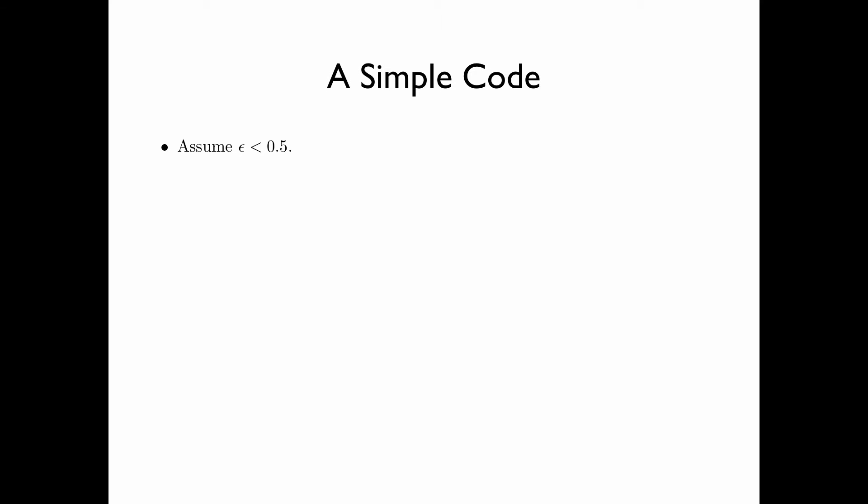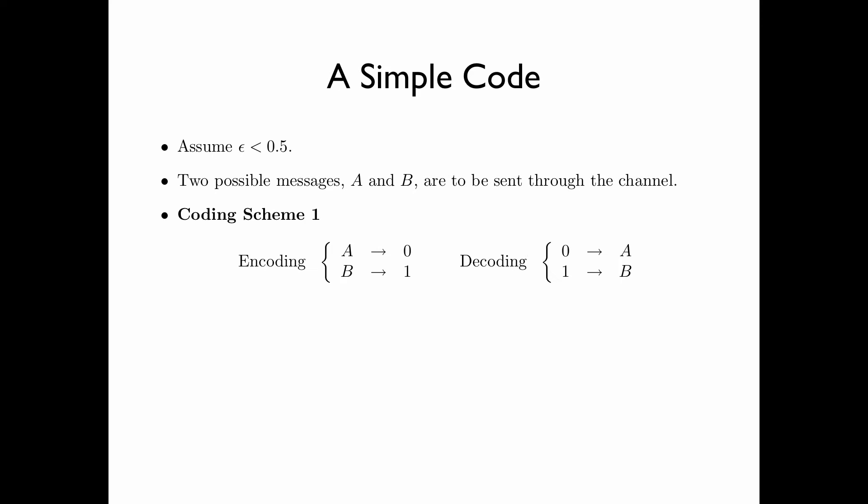Let us now take a look at a very simple code. For the sake of our discussion, assume that epsilon is strictly less than 0.5. We are going to transmit two possible messages, A and B, through the channel. We call this Coding Scheme 1. We encode A to 0 and B to 1. That is, if the message is A, then we transmit 0 through the channel, and if the message is B, then we transmit 1 through the channel.